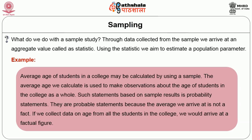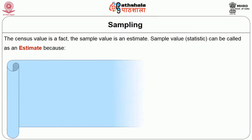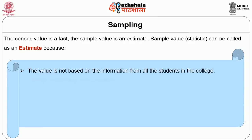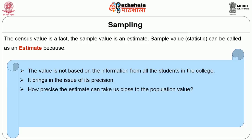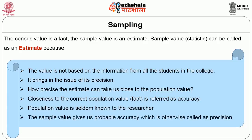These are probable statements because the average we arrive at is not a fact. If we collect data on age from all students in the college, we would arrive at a factual figure. While the census value is a fact, the sample value is an estimate. We call the sample value an estimate because it is not based on information from all students. Estimate also brings in the issue of precision — how close this estimate is to the population value. Closeness to the correct population value is referred to as accuracy. Since population value is seldom known, the sample value gives us probable accuracy, which is otherwise called precision.